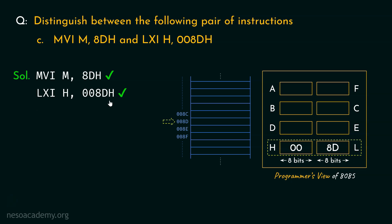To summarize: MVI M,8DH will load the data 8DH into the memory location pointed by the HL register pair — so before executing this instruction, you must have already loaded the HL register pair with the intended address. On the other hand, LXI H,008DH loads the HL register pair with 008DH itself, which at a later point will be considered as the address.